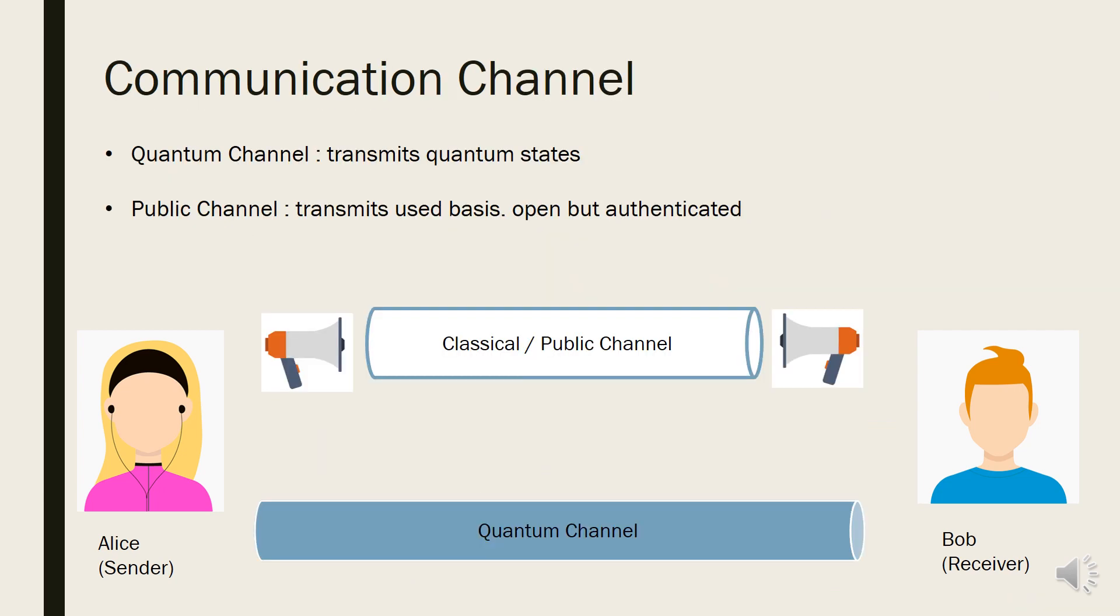After sender Alice and receiver Bob make the raw keys respectively, they disclose the bases they used by classical channel, also called public channel. Public channel is totally open to everyone including eavesdropper, but it needs to be authenticated. It means that public channel is resistant to falsifying or tampering, but not resistant to overhearing.